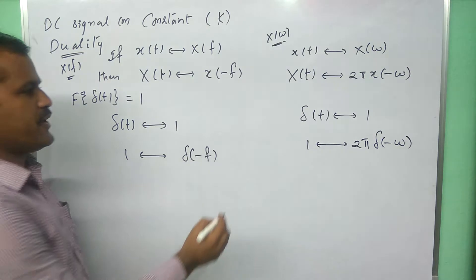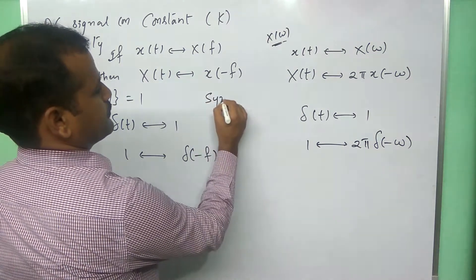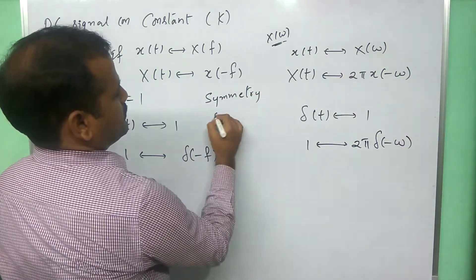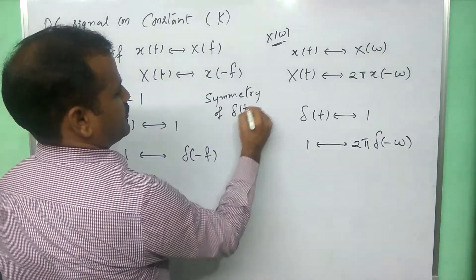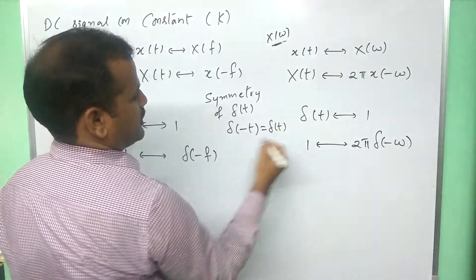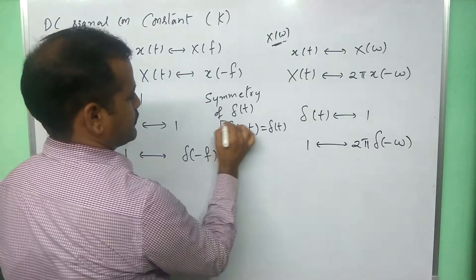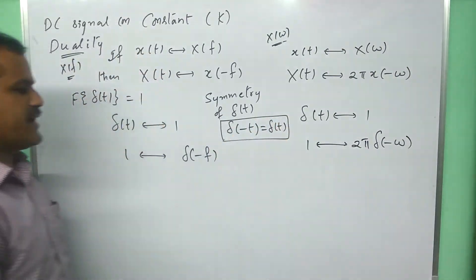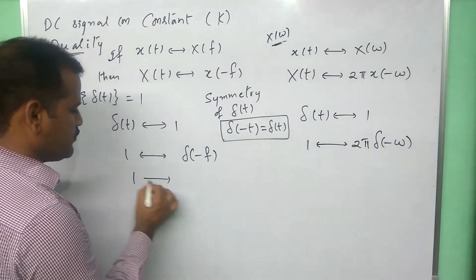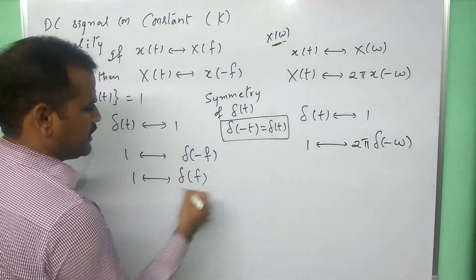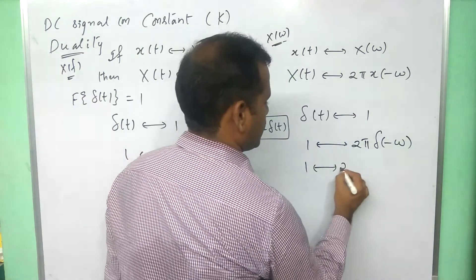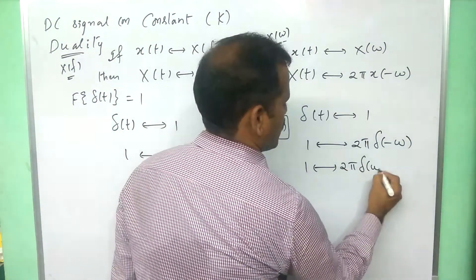We know the symmetry property of the impulse function. The symmetry property of delta of t says that delta of minus t is equal to delta of t. So, we can write delta of minus f as delta of f. Therefore, 1 has Fourier transform delta of f in X of f analysis. Here, 1 has Fourier transform 2 pi times delta of omega in X of omega analysis.